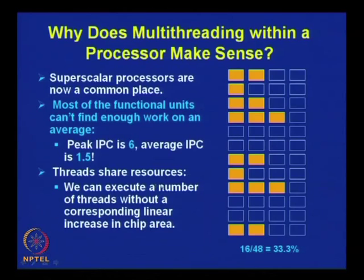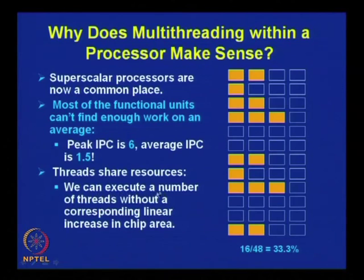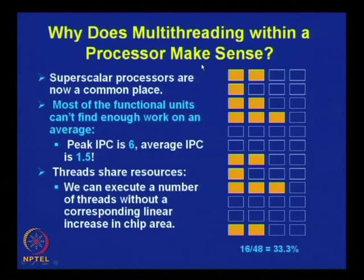One more important point: threads share resources. Having multiple threads has some advantage because threads will be sharing resources. Since they are sharing resources, with a small incremental increase in hardware resources, you can go for multiple threads. We can execute a number of threads without a corresponding linear increase in chip area — the increase in chip area will not linearly increase as you keep adding threads. With small additional hardware, you can have more threads, so that is why multiple threading within a single processor makes sense.